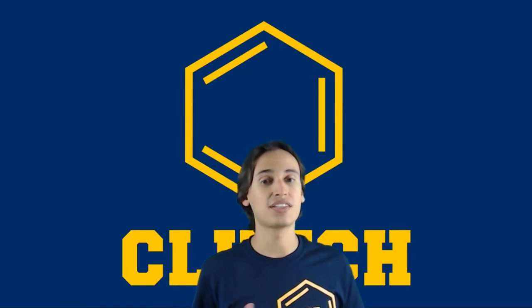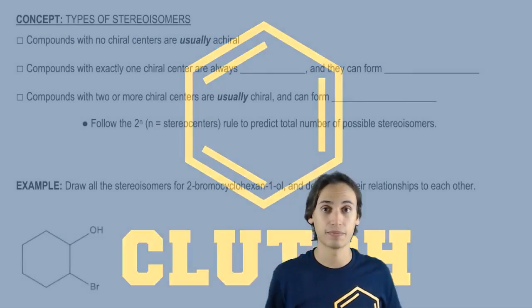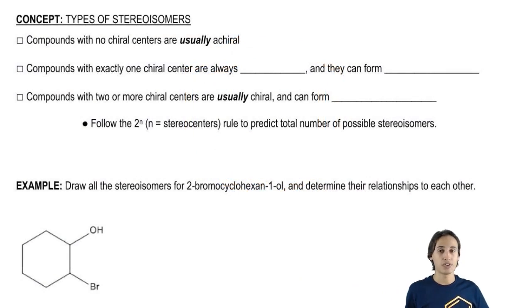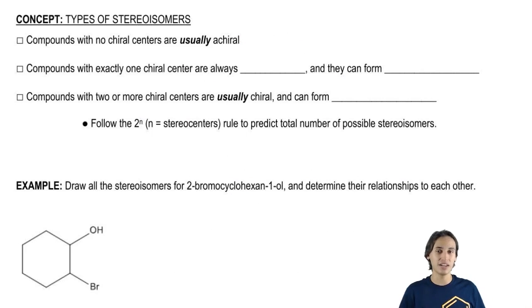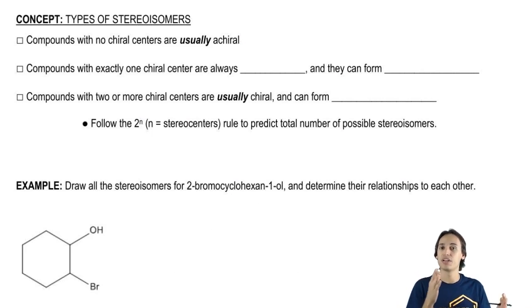Now let's talk about ways to use chiral centers to predict the types of stereoisomers that we're going to get. It turns out that the types of stereoisomers can be roughly divided into how many different chiral centers you have.